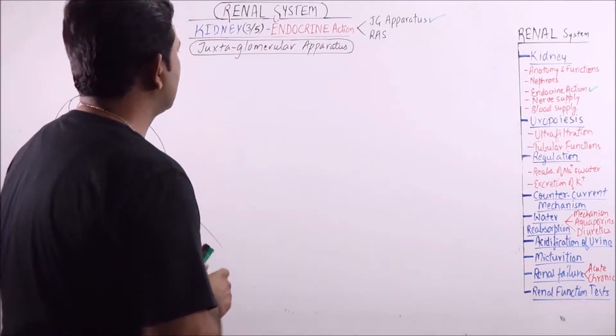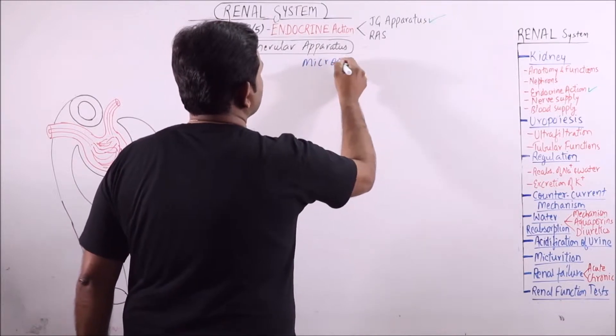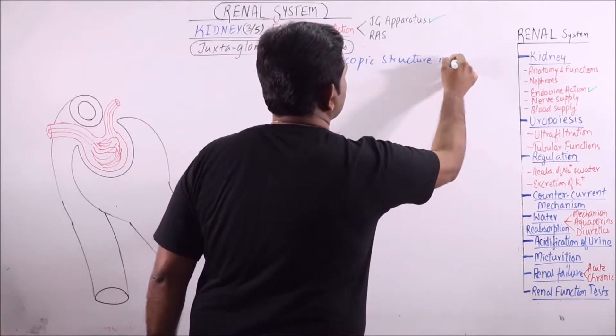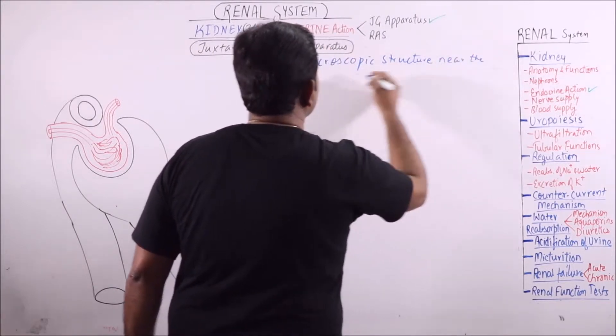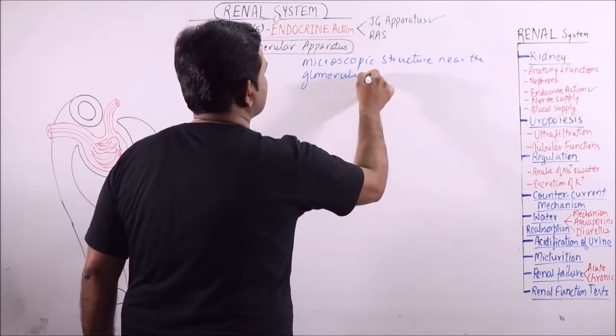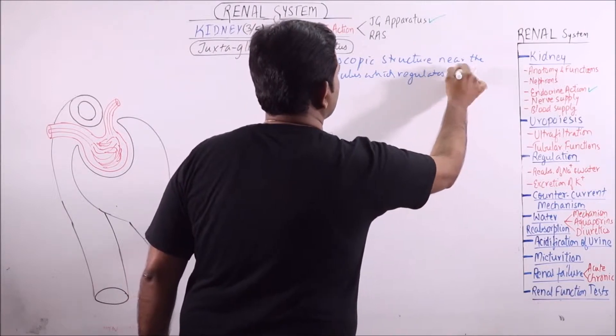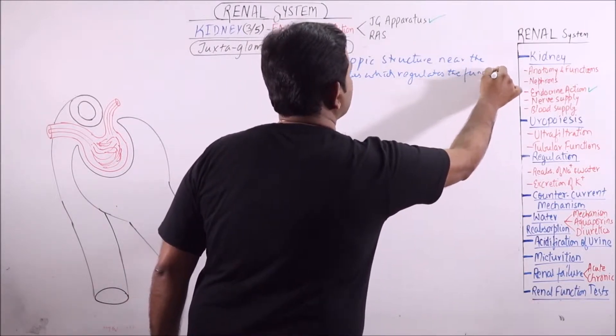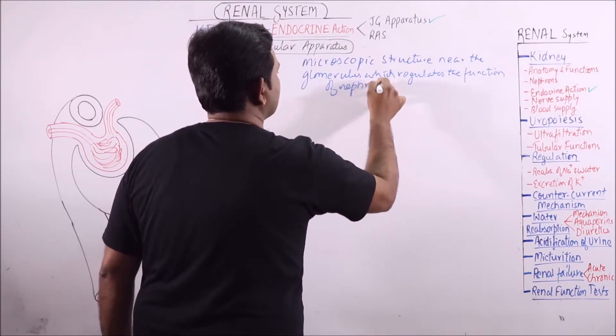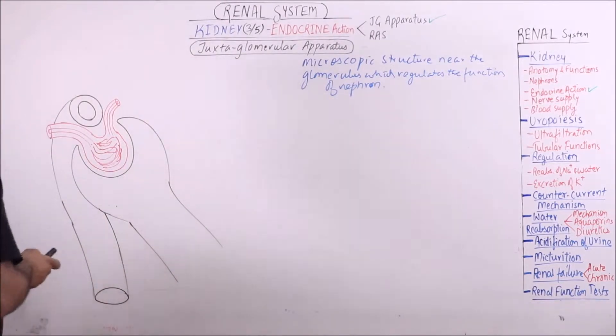Now what is this Juxtaglomerular Apparatus? This is a microscopic structure near the glomerulus which regulates the function of nephron. Now it is having three components.